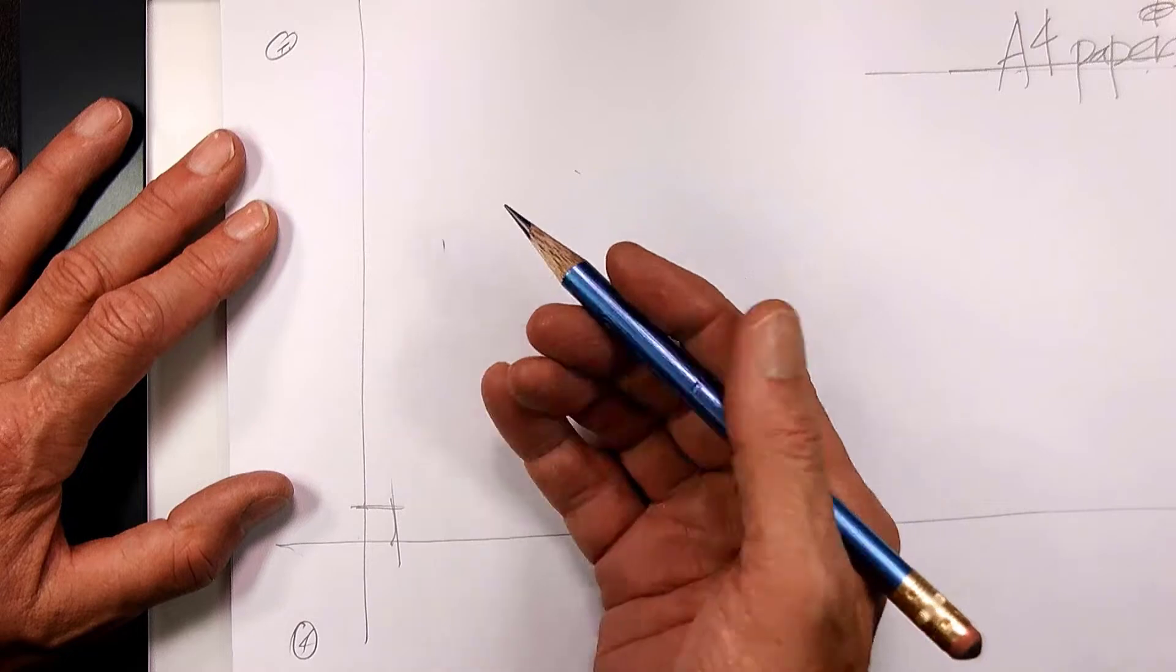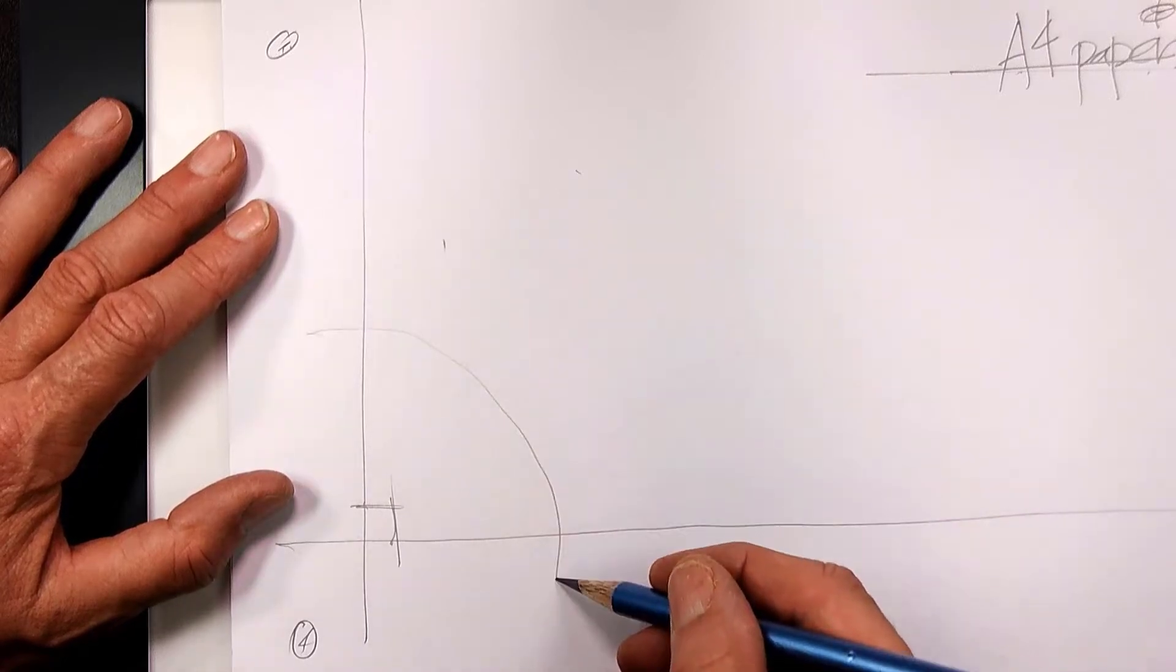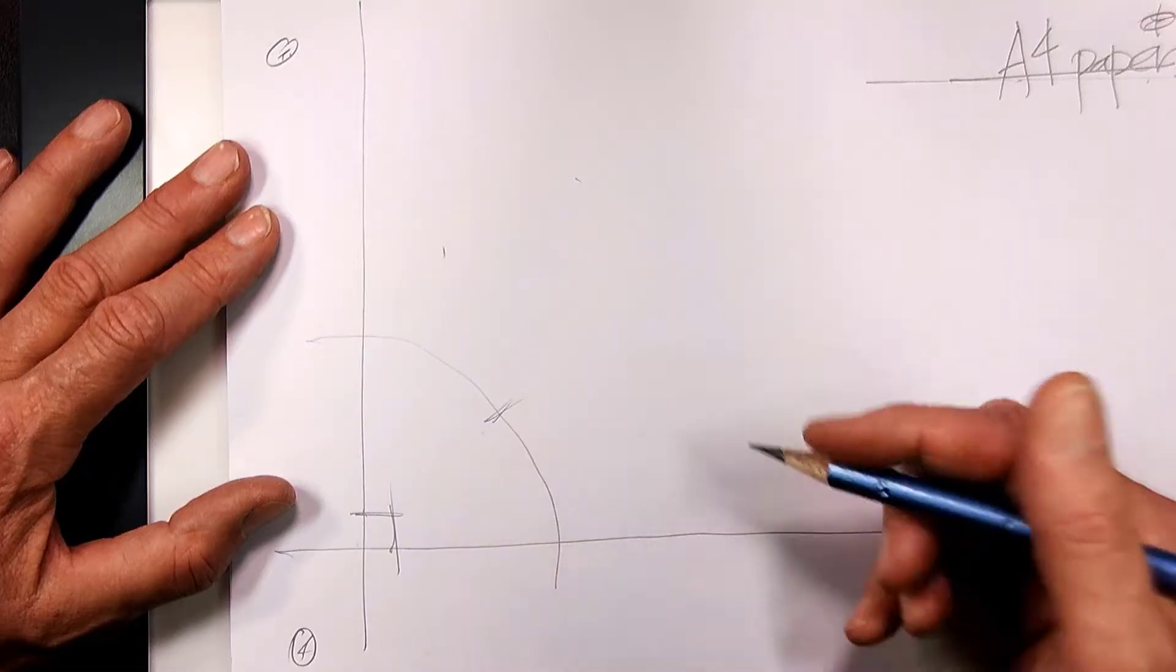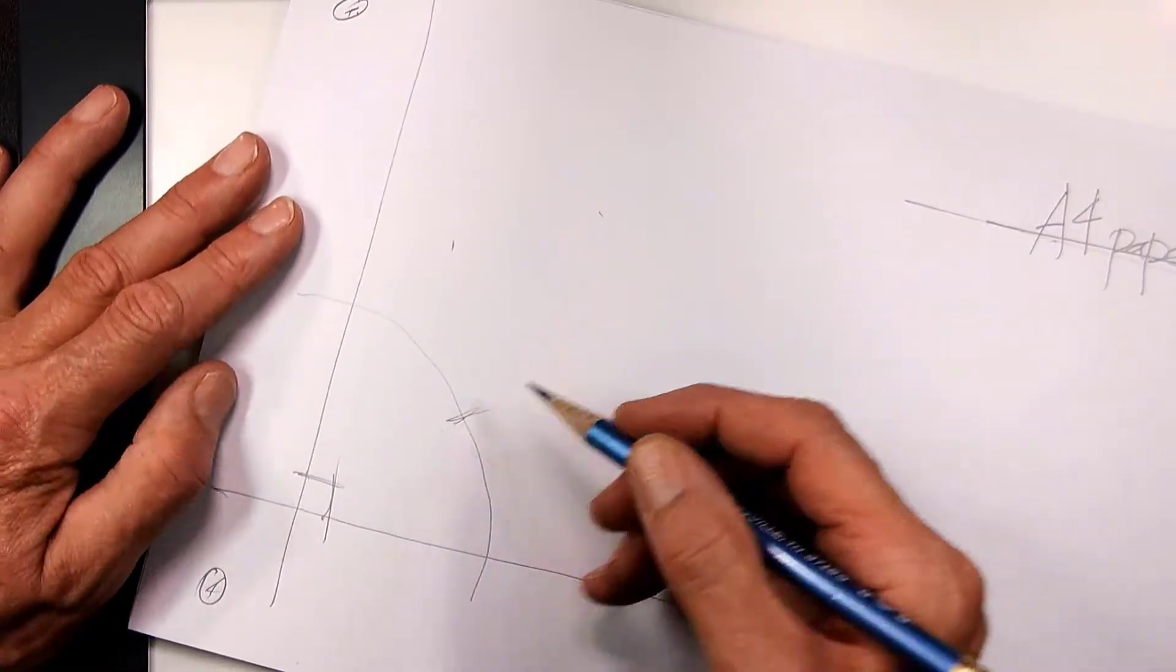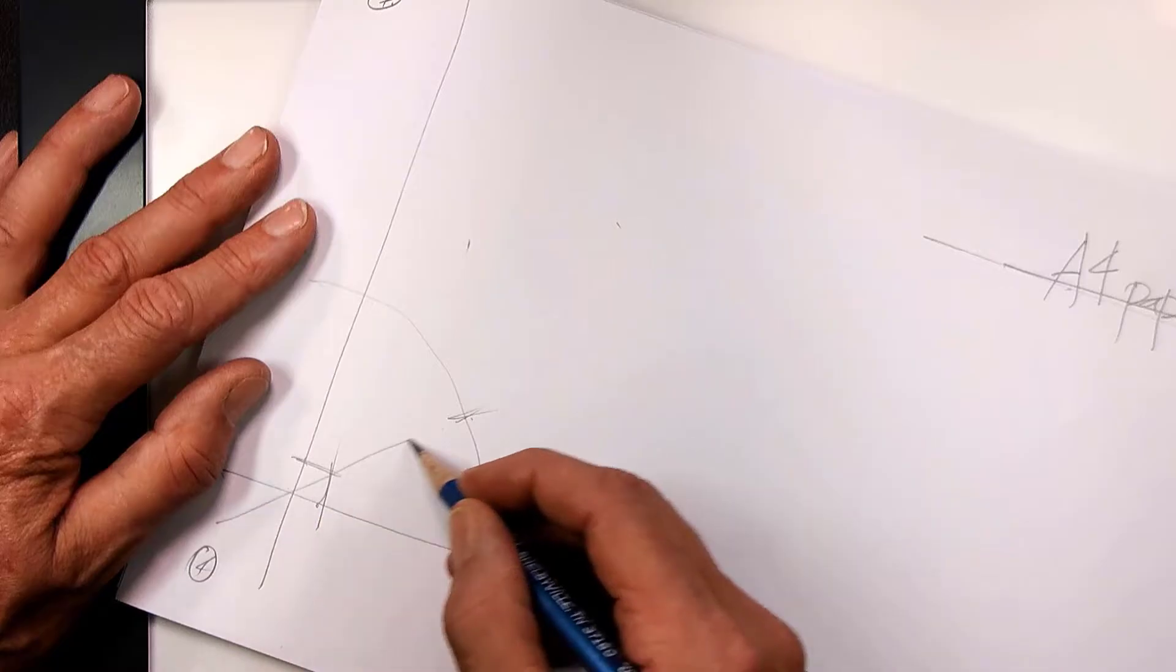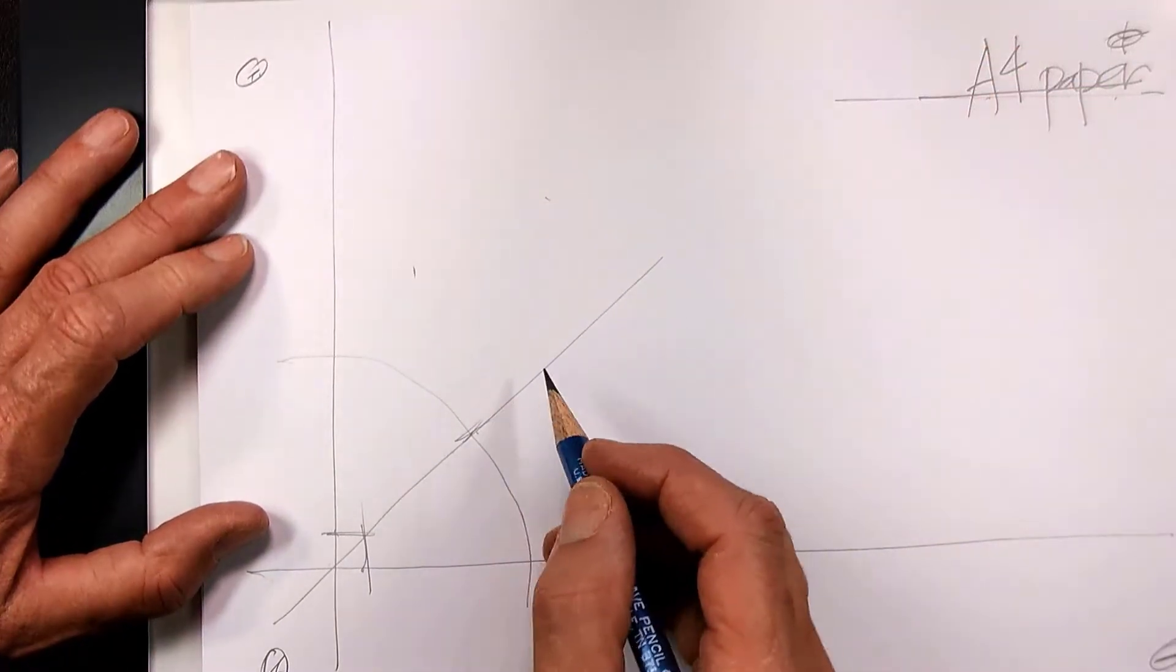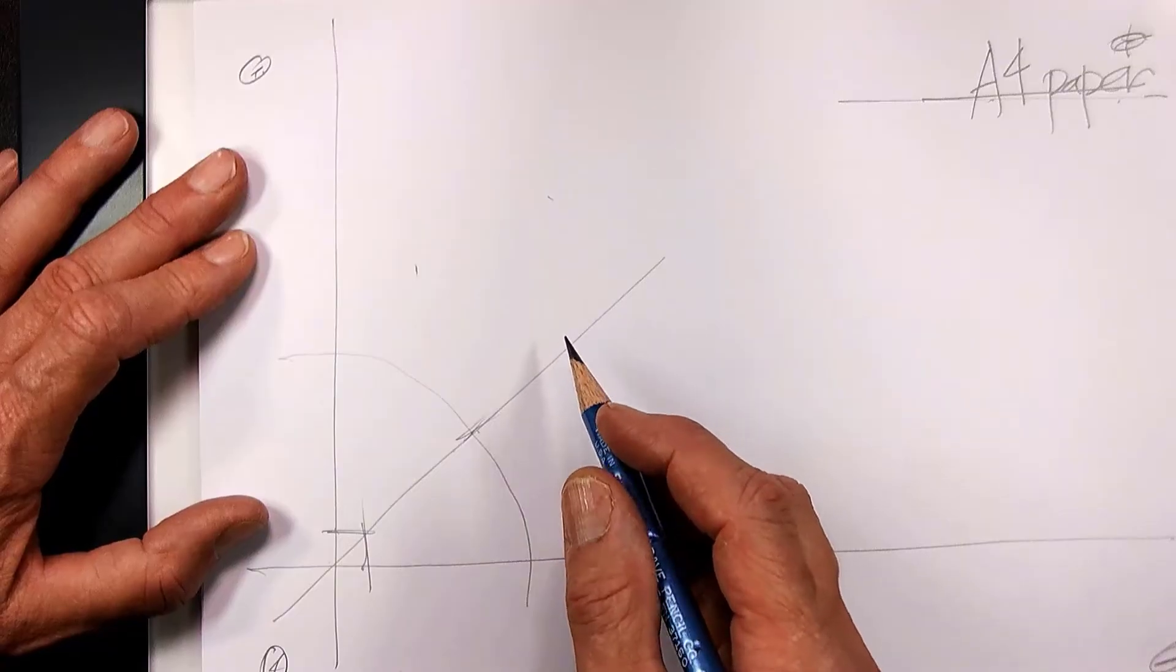Next thing to do is to draw an arc like that, and to estimate the midpoint, and then draw a diagonal rotating the paper like that.